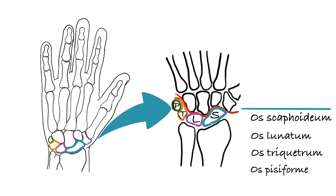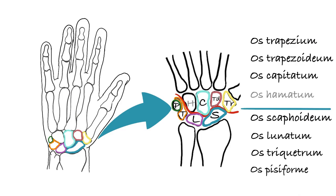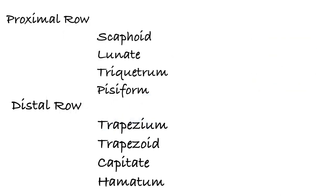Bones in the distal row from thumb to pinky finger on palmar side of the hand are os trapezium, os trapezoideum, os capitatum, and os hamatum. These are anatomical names of carpals. To sum up all carpals from proximal to distal and lateral to medial side: